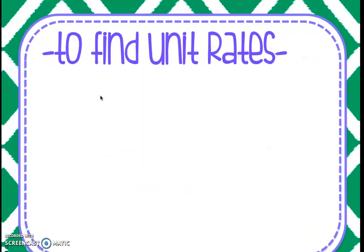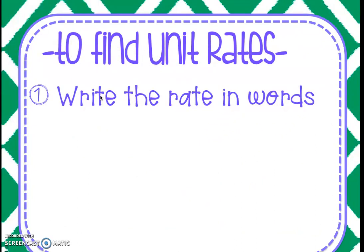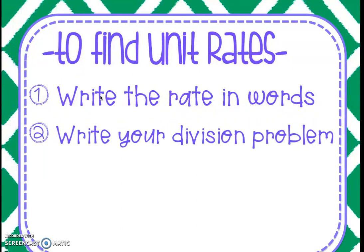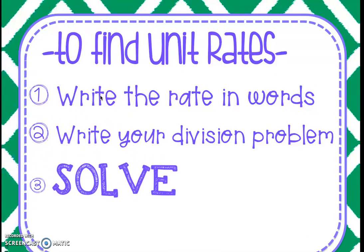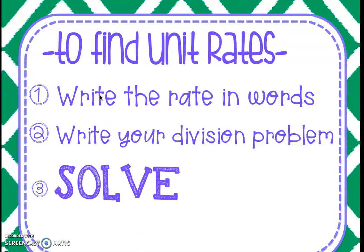To find a unit rate is very simple. The first thing you have to do is write the rate in words — that's going to help you set up your division problem and make sure everything's in the right order. After you write the rate in words, you find your division problem by picking out your dividend and your divisor. Then just solve it out. Today, since we're not assessing the division target, you're more than welcome to use a calculator to help you with your division.